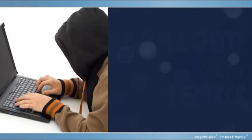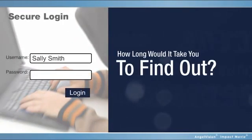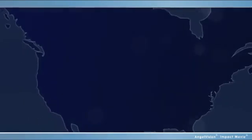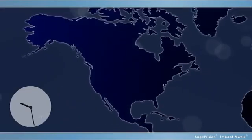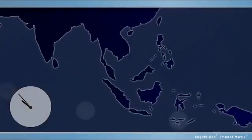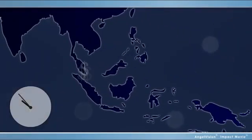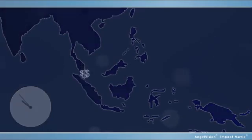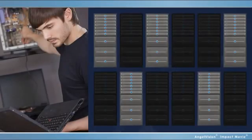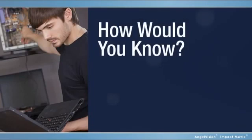If your systems were victim of unauthorized access, how long would it take you to find out? Would you be able to respond before it was too late? Would you be able to trace the source? If a banking customer deposited money in Denver and then suspiciously logged in 20 minutes later from Singapore and transferred funds? Or what if a disgruntled worker with privileged user access decided to sabotage your network? How would you know?